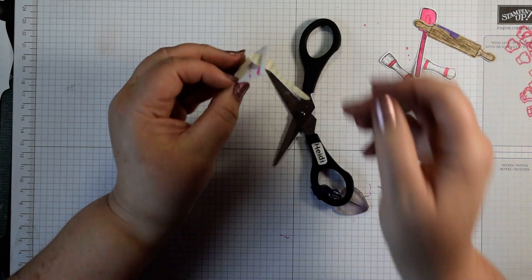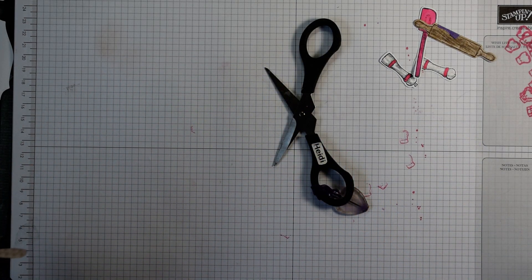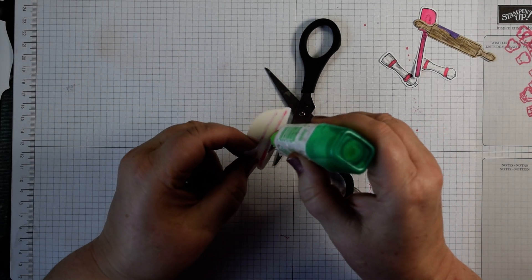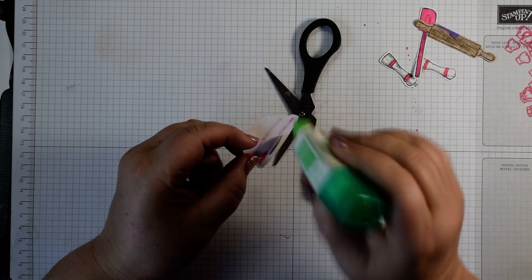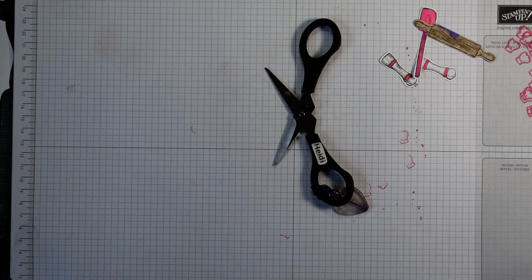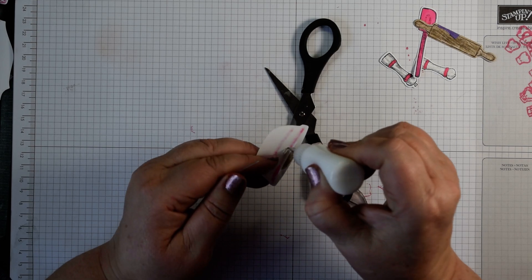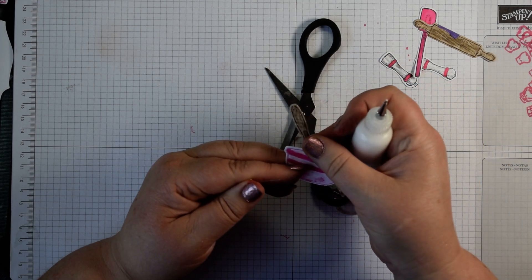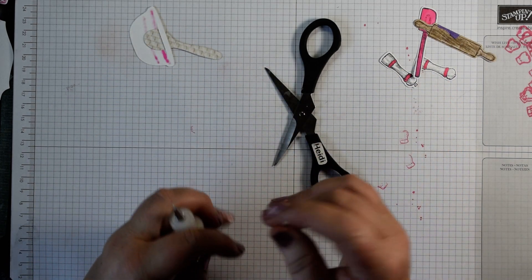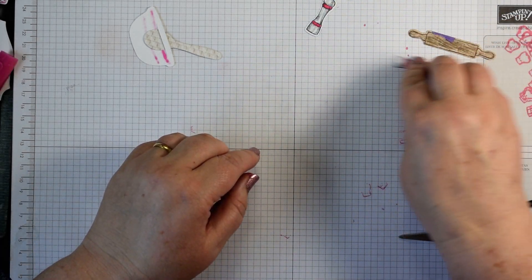To hold that in place I'm just going to use a dab of glue underneath on the reverse of that. Just putting a little bit underneath there just allows us to have our spoon right. Leave that face down because what we're then going to do is add dimensionals onto the back of several of these items. So these ones are going on flat.